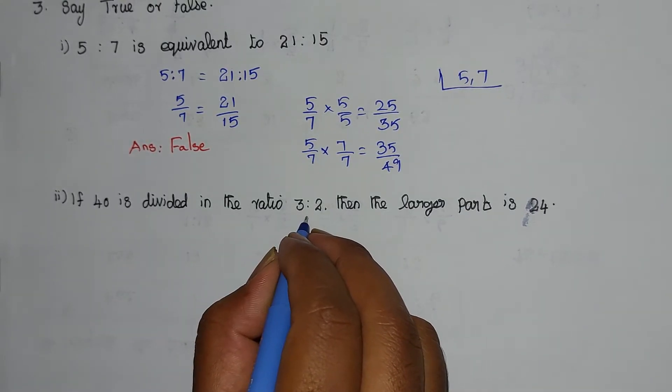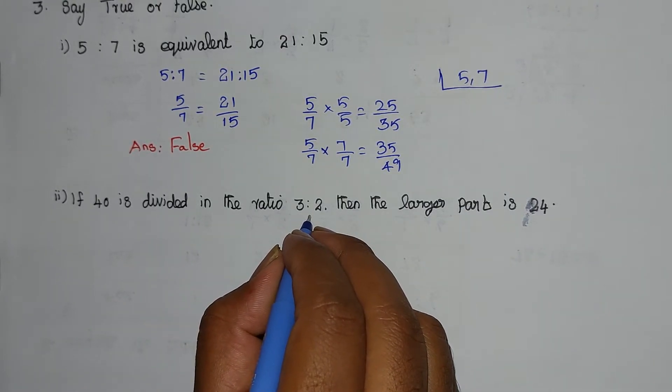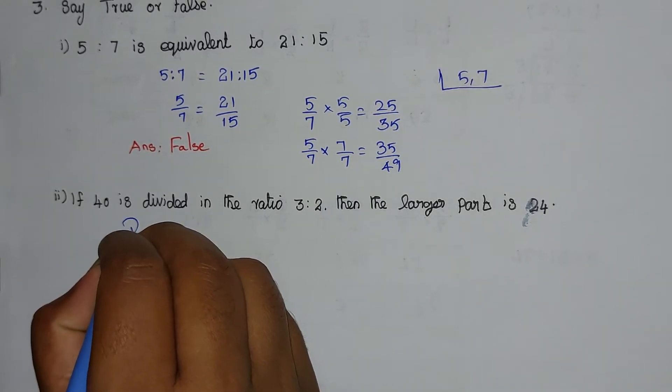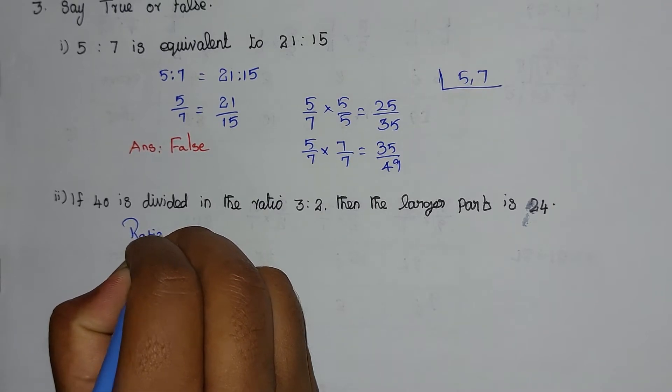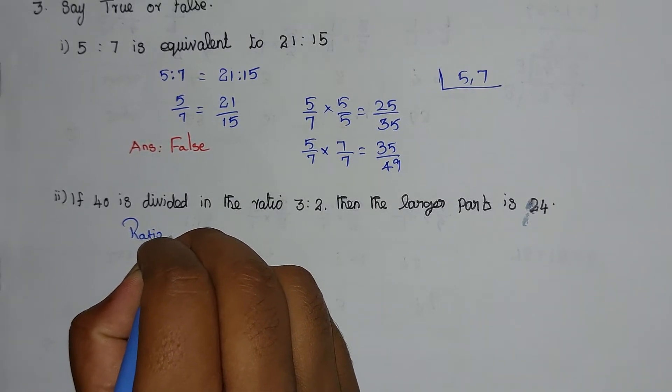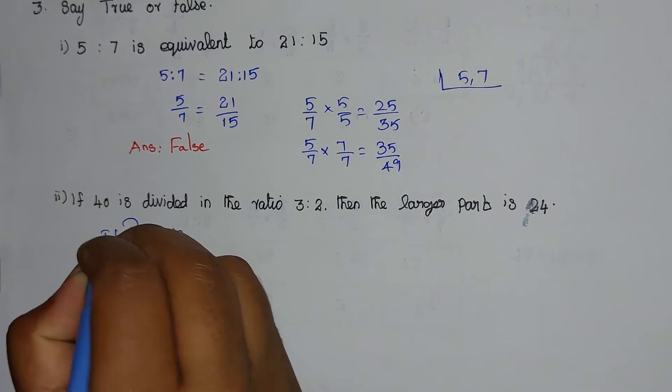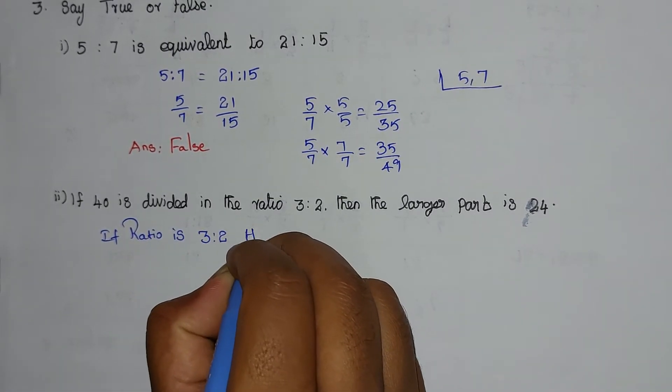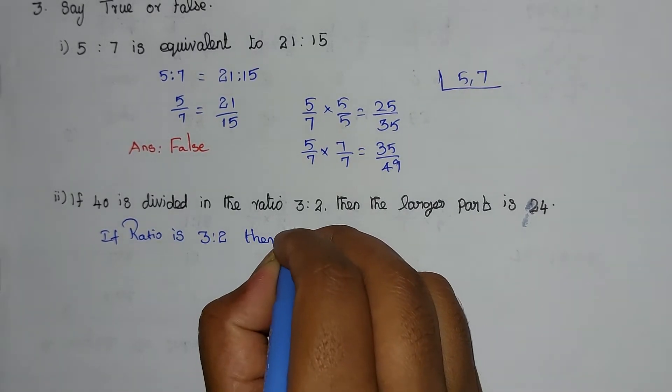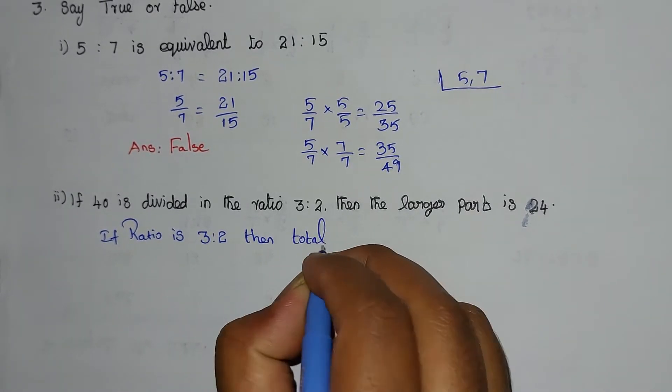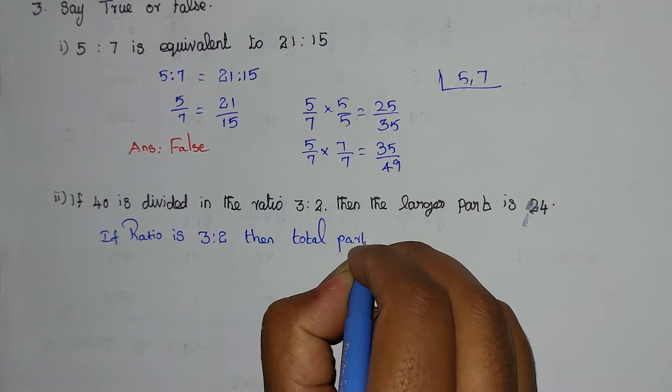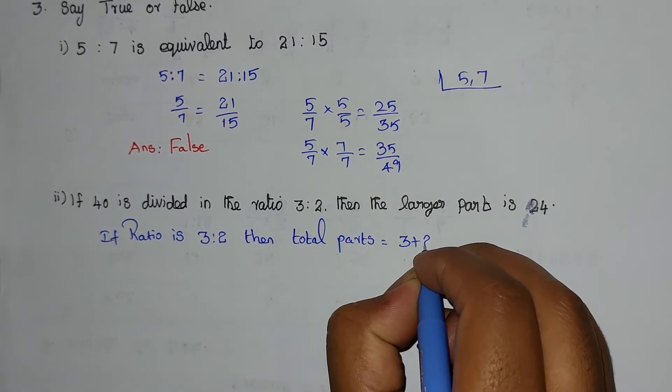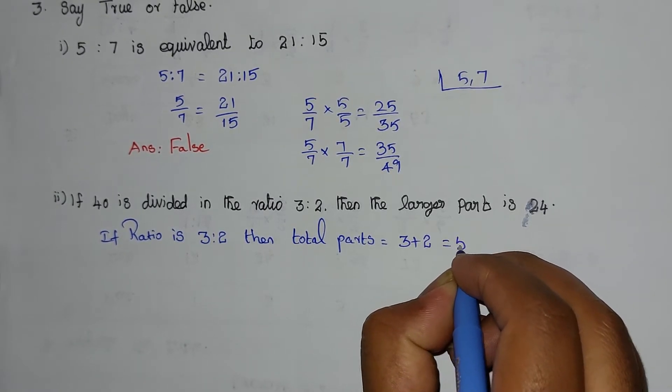Using the property: if the ratio is A is to B, then total parts equals A plus B. If ratio is 3 is to 2, then total parts equal to 3 plus 2, equal to 5.